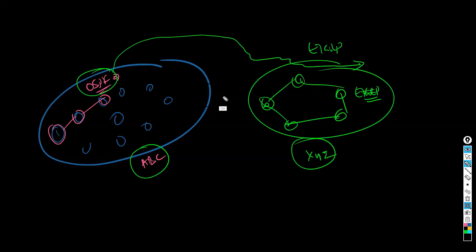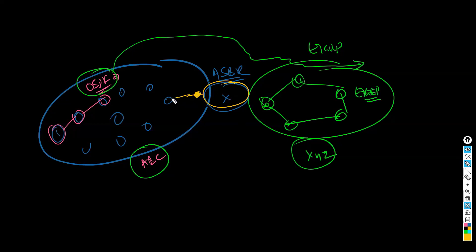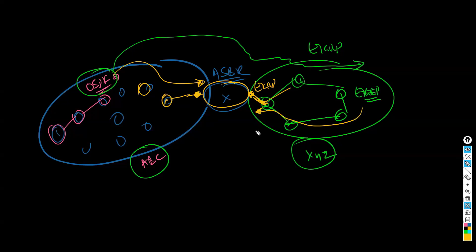We need one router to handle this — called the Autonomous System Border Router, or ASBR. This border router runs OSPF on one interface, receiving all OSPF routes, and runs EIGRP on the other interface, receiving EIGRP routes. This middle router — the ASBR — acts like a translator between the two routing domains.